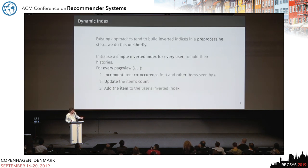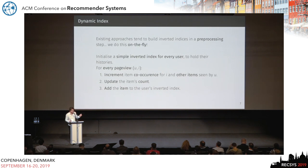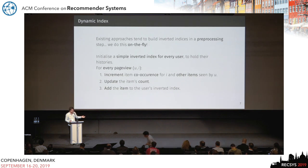Most existing approaches use an inverted index and build it in a pre-processing step, but there's actually no need to do this. You can build a dynamic index as you iterate over your data. We maintain an inverted index for every user, starting off empty. When you see a new page view — a user and an item — you look at all the items that have been seen by the same user beforehand, do a small increment on the item co-occurrence in your matrix, count the fact that you saw the item, and then add the item to the user's inverted index. That's basically all there is to it for this first step.